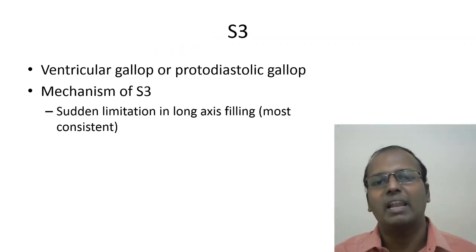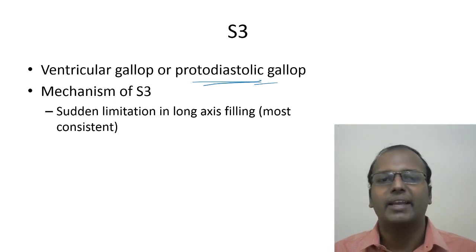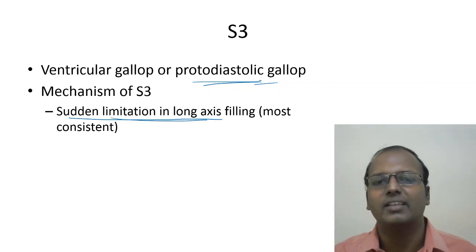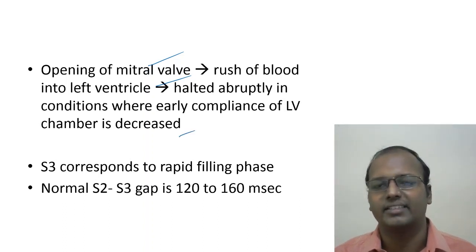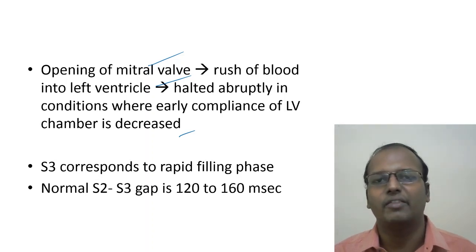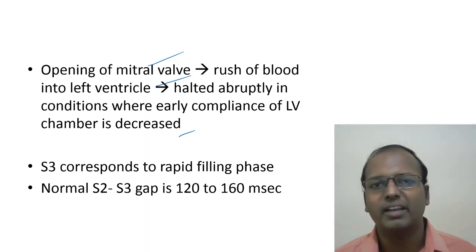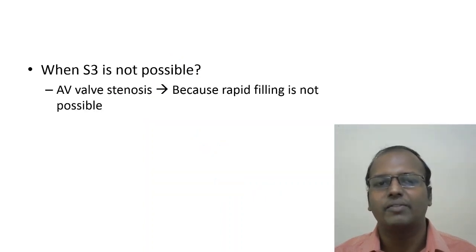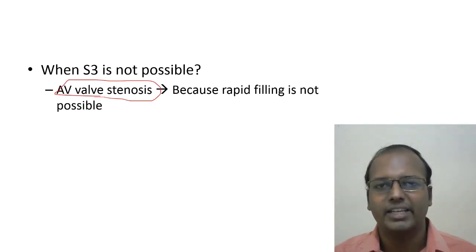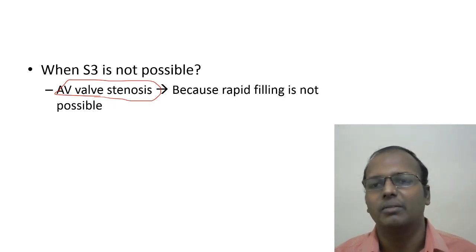S3 is also called ventricular gallop or proto-diastolic gallop. The mechanism is sudden limitation of long-axis filling during the rapid filling phase of diastole. The mitral valve opens, blood flow halts abruptly because the left ventricular compliance is decreased — due to infarction or abnormal contractility. This produces S3. The normal S2-S3 gap is 120–160 milliseconds. S3 cannot occur if there is AV valve stenosis (e.g., mitral or tricuspid stenosis) because rapid ventricular filling cannot happen.